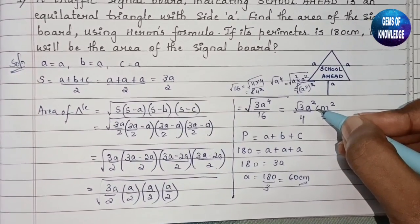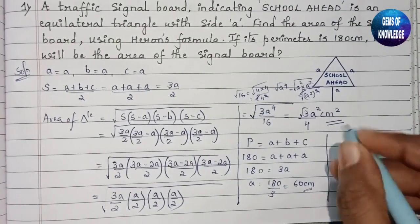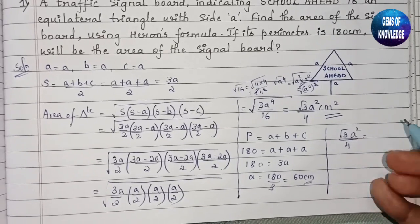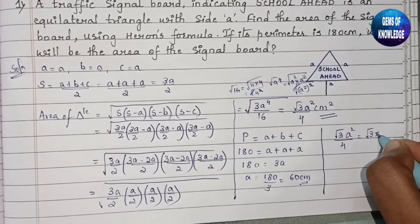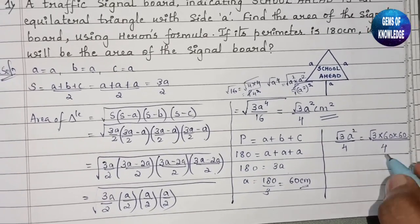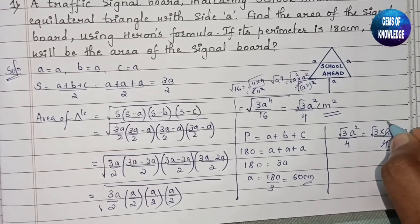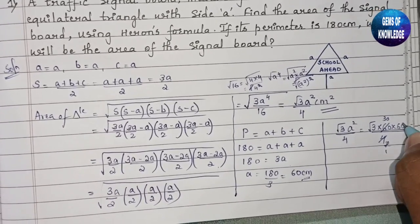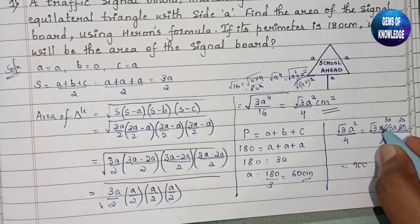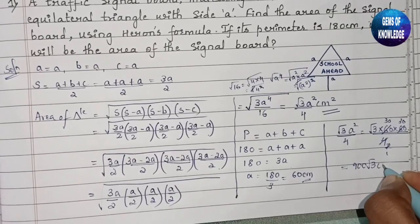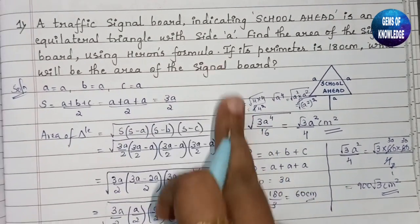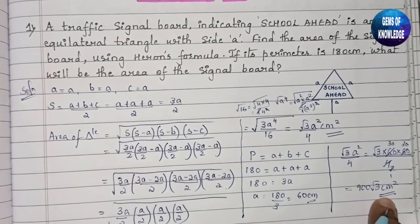Substituting A = 60 into the formula root 3 times A squared divided by 4: we get root 3 into 60 into 60 divided by 4, which is root 3 into 900. So the area of the signal board is 900 root 3 centimeter square.